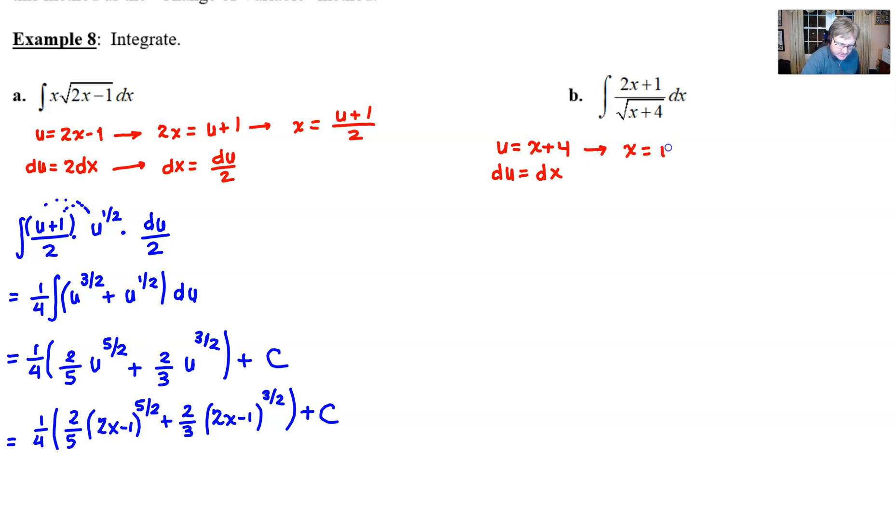So instead, what we're going to do is we're going to solve this for x, which in this case is going to be u minus 4. And then we can start to replace our variables. So let's see what we've got. We've got the integration of instead of 2 times x, we're going to say 2 times u minus 4, plus 1, and all that's divided by the square root of u, or you could say u to the half if you'd like. And then the cool thing about this problem is that the du and the dx are interchangeable, just easily swap them out, and there you go.